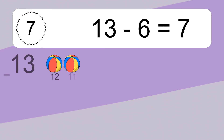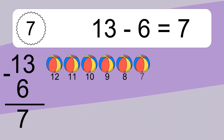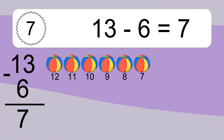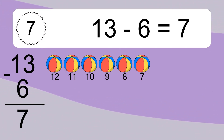13 minus 6 equals what? 13 minus 6 equals 7. Let's count it: 12, 11, 10, 9, 8, 7.